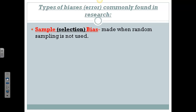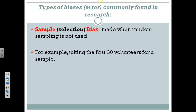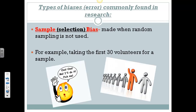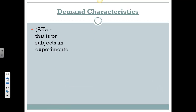First off, we might start with sample bias, sometimes called selection bias. This occurs any time a random sample is not used, because then the sample is not likely representative of the population. An example of sample bias might be if we take the first 30 volunteers for our experimental group — because we asked a class if they'd like to participate, or answered an ad on paper or something like that. So when we use volunteers, we're likely to have sample bias.